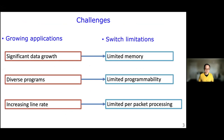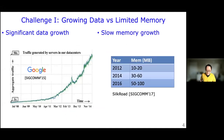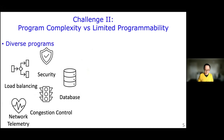From our experiences developing these applications on programmable data planes, we feel a tension between the growing complexity of applications and the still-limited capabilities of switches. I'll elaborate on this tension in three aspects. The first is growing data versus limited memory. This is an old Google trend showing that in six years Google traffic grew about 50 times, but in about the same range of time switch memory only grew about five times. As we have more data to process and store, switch memory will be fundamentally limited.